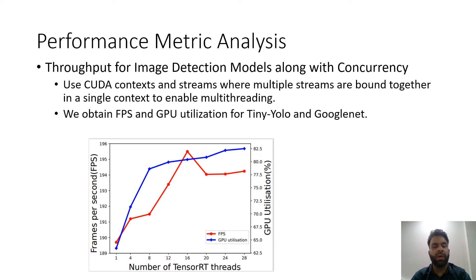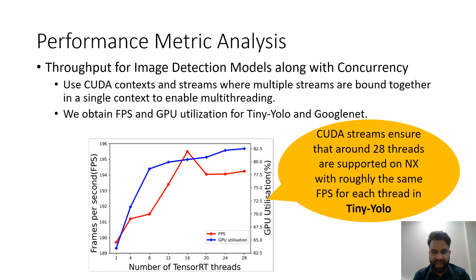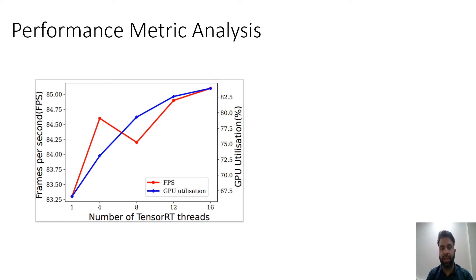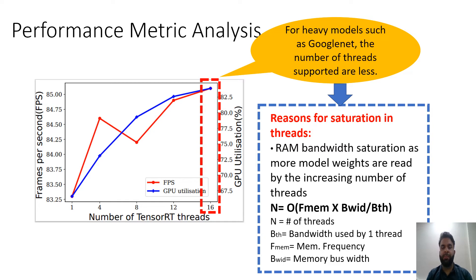Next, we study throughput for image detection models along with concurrency support. We use a single CUDA context with multiple streams — multiple threads bound together so that multi-threading is enabled. We obtained FPS and GPU utilization values for both Tiny YOLO (a lighter model) and GoogLeNet (a heavier model). On NX for Tiny YOLO, we found that the number of supported threads is 28 — beyond this number, FPS goes down and GPU utilization saturates. For GoogLeNet, fewer threads are supported.